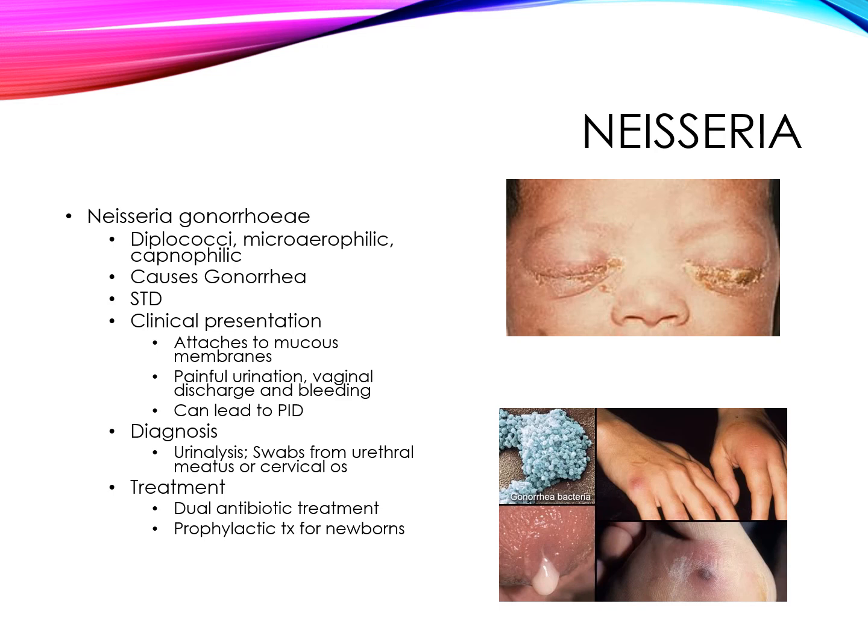To diagnose gonorrhea, they will order a urinalysis and take swab samples of the urethral meatus, the cervical os, the rectum, or the throat, depending on where symptoms present. Gonococcal infections remain the second most common reported sexually transmitted disease. They have developed a quick test called the nucleic acid amplification test, or NAAT, which is deemed the most reliable screening test for gonococcal and chlamydial infections.